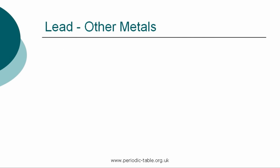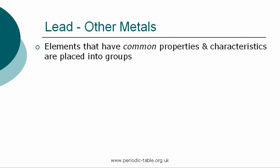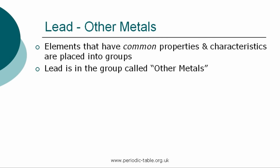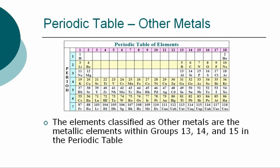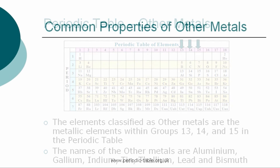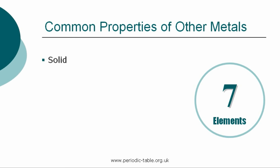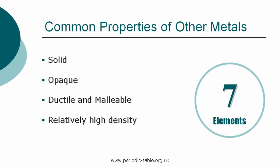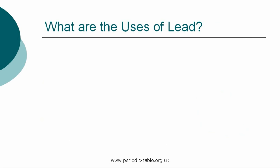Once the properties of an individual element have been identified, it is placed into a group of elements which have common properties and characteristics. Lead is in the group called the other metals. The seven elements classified as other metals are the metallic elements within groups 13, 14, and 15 in the periodic table. The names of the other metals are aluminum, gallium, indium, tin, thallium, lead, and bismuth. The other metals are solid, opaque, ductile, and malleable. They have a relatively high density and are conductors of both electricity and heat.